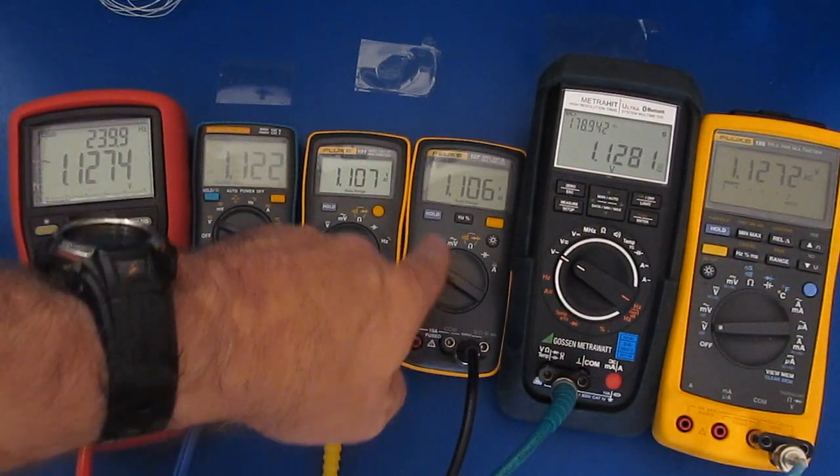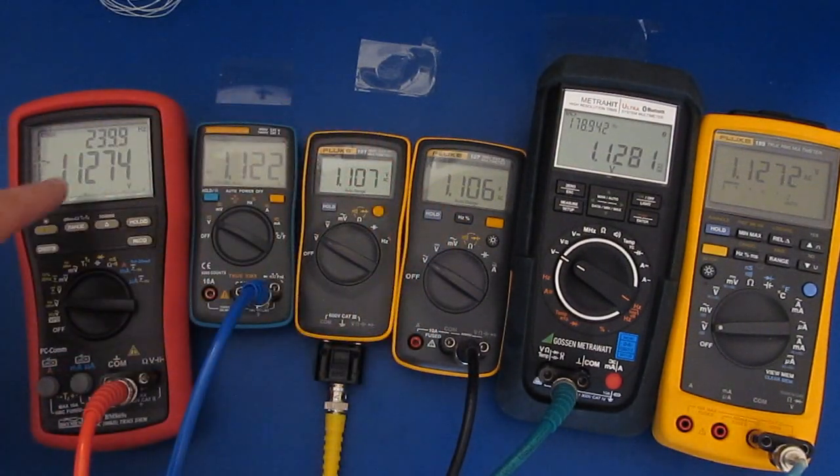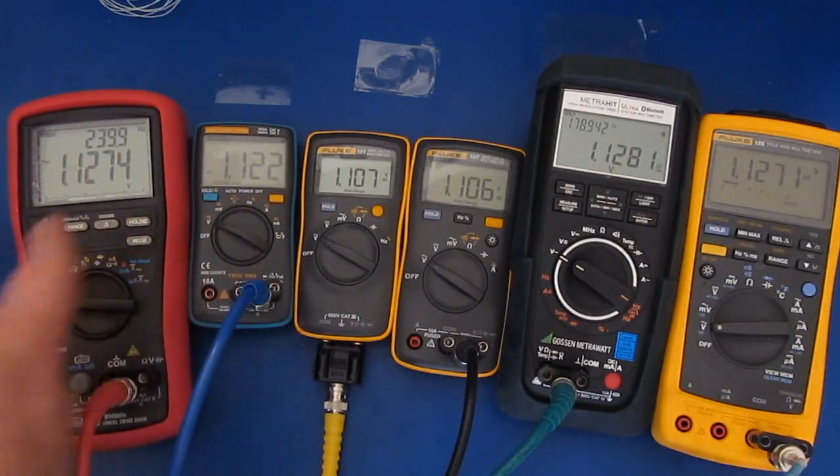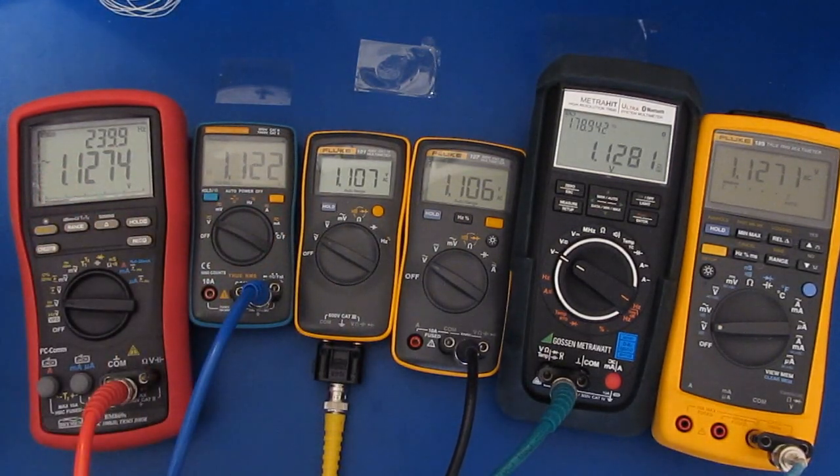You can see our two averaging meters now are reading slightly low. Again I would expect this to be a little bit lower because there is quite a bit of high frequency content in that square wave.